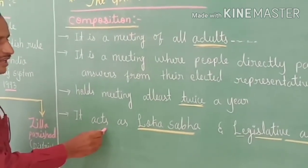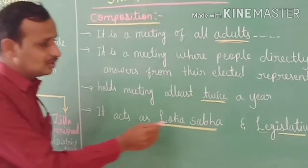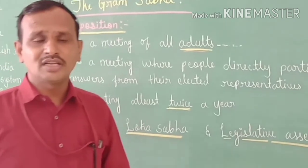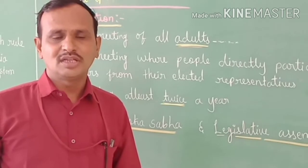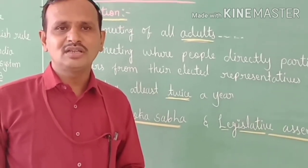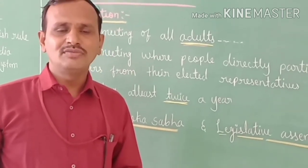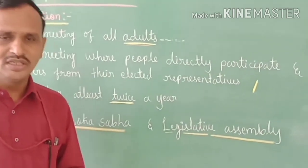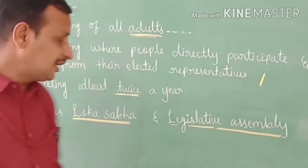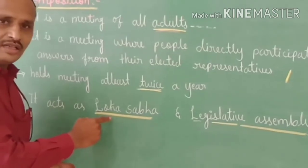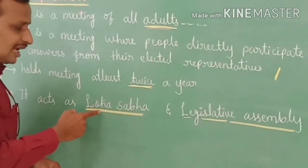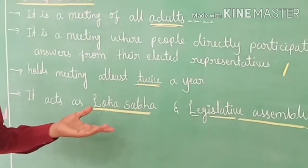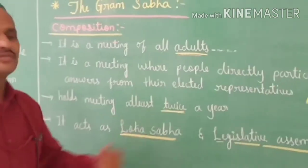The Gram Sabha acts like the Lok Sabha and Legislative Assembly. Just as there are two houses in the parliament of the central government — the Lok Sabha (lower house) and Rajya Sabha (upper house) — and in the state there is the Legislative Assembly (lower house) and Legislative Council (upper house), the Gram Sabha acts like the Lok Sabha at the centre and the Legislative Assembly at the state level.